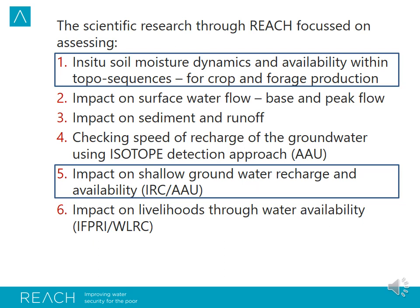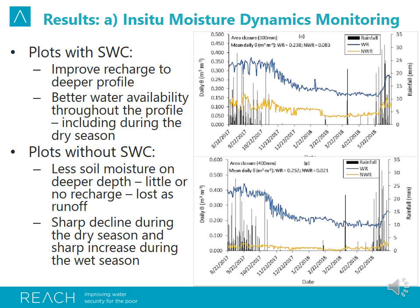Most of the studies are conducted in collaboration with external institutions such as IFPRI, IRC, and Bern University Center for Development and Environment. The in-situ moisture dynamics monitoring shows that plots with conservation structures have better soil moisture holding capacity than those without. The deeper you go, the moisture availability with conservation structures is higher compared to those without, as shown by the yellow line for plots without conservation structures. This demonstrates that SLM enhances moisture recharge to the groundwater.